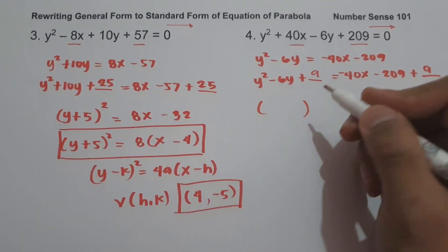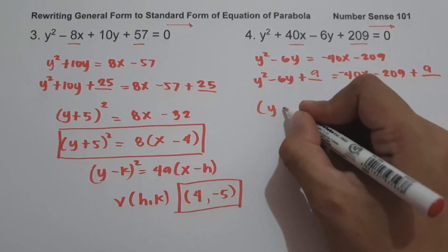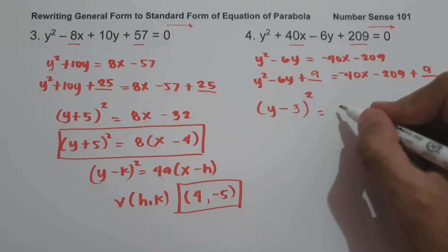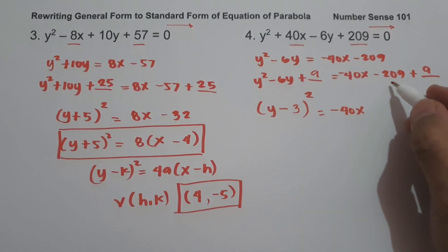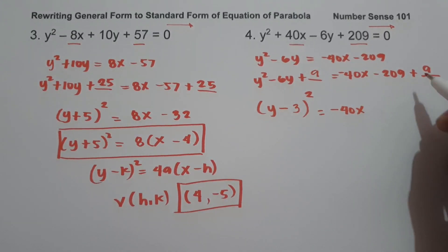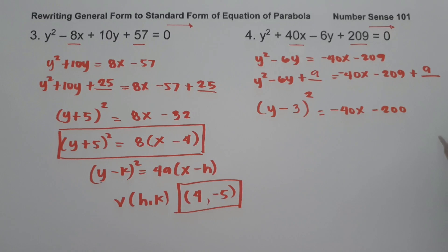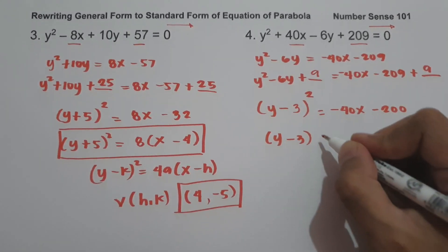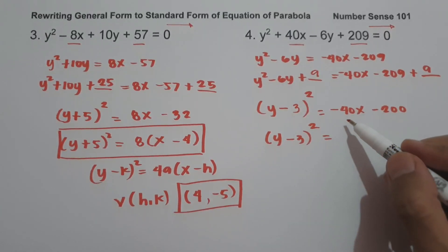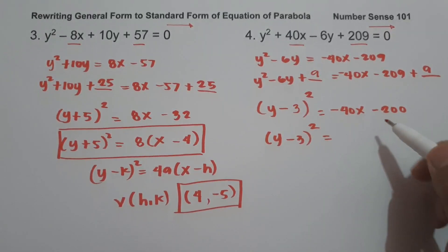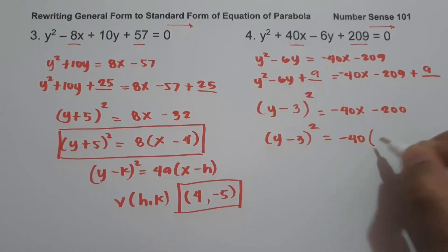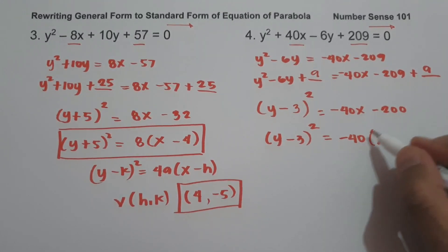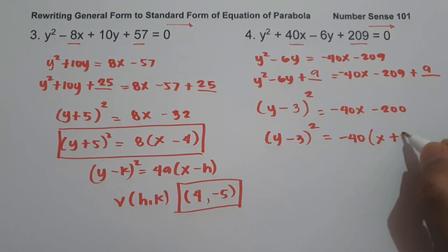Factoring: square root of y² is y, sign of the middle term is negative, square root of 9 is 3, giving (y - 3)². Then -40x; -209 + 9 = -200. Rewriting (y - 3)², the greatest common factor between -40x and -200 is -40. Dividing: -40x ÷ -40 = x, and -200 ÷ -40 = +5.